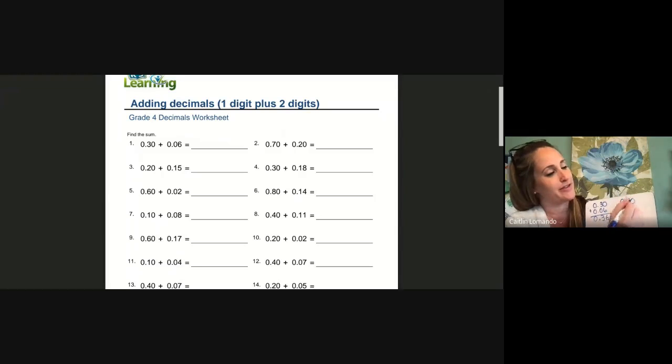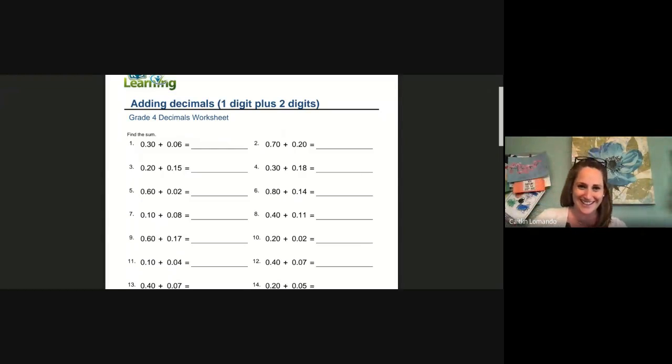Let's look at number two. 70 hundredths plus 20 hundredths. Again, we start all the way to the right. Zero plus zero is zero. Seven plus two is nine. Put your decimal point. Easy peasy lemon squeezy. It doesn't get much harder than this.